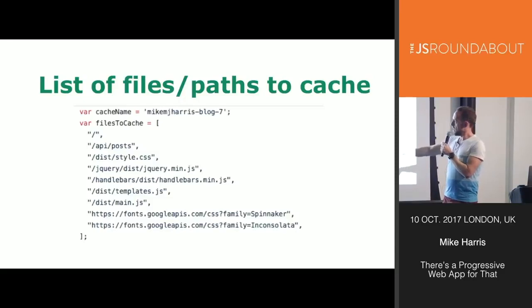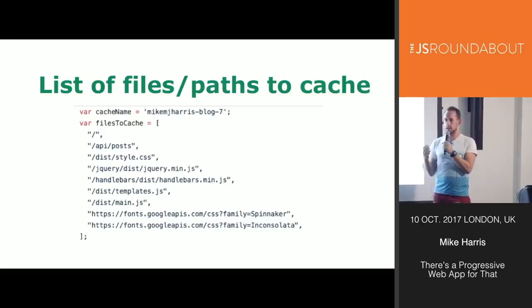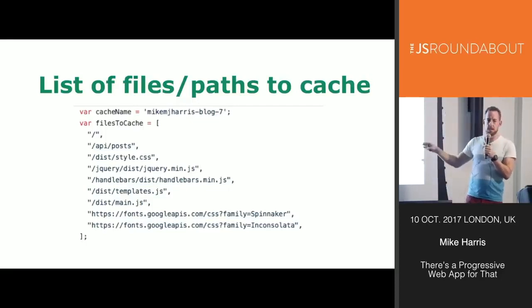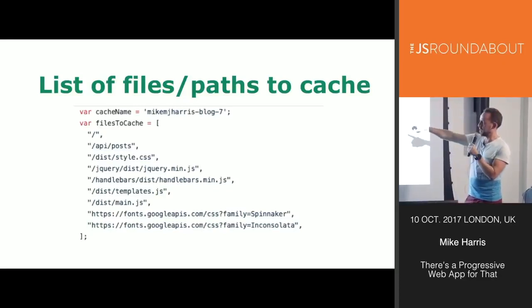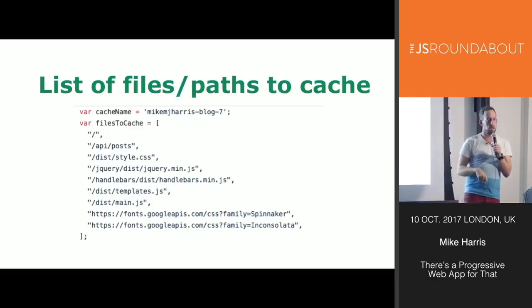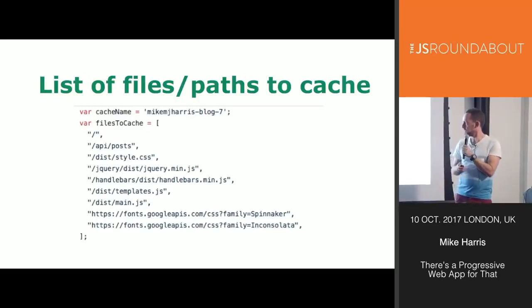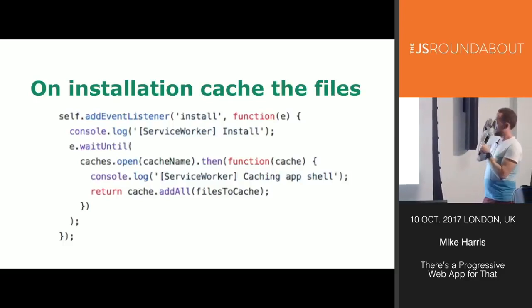The second part: we've got a cache name and then a list of files that we want to cache. The service worker is this proxy server and all I want is a whole list of files and assets to cache. The service worker stores that so that when my app is offline, I can use this cache to serve content. My app has an API to get all my posts from. You're not limited to routes in your own domain - here I'm also getting some Google API fonts and a couple of JavaScript files.